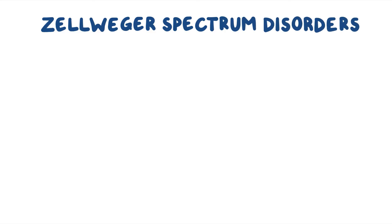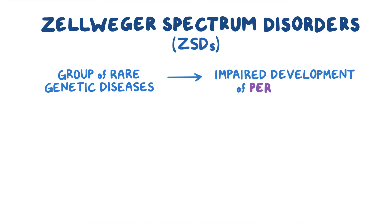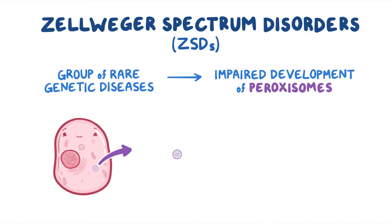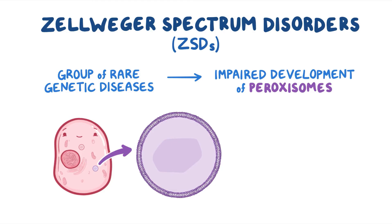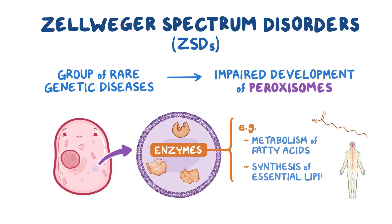Zellweger Spectrum Disorders, also called ZSDs, are a group of rare genetic diseases that impair the development of peroxisomes, which are structures found in almost every cell of the body. Peroxisomes house enzymes that are responsible for a number of biochemical pathways, including the metabolism of fatty acids and the synthesis of lipids essential for nervous system development.